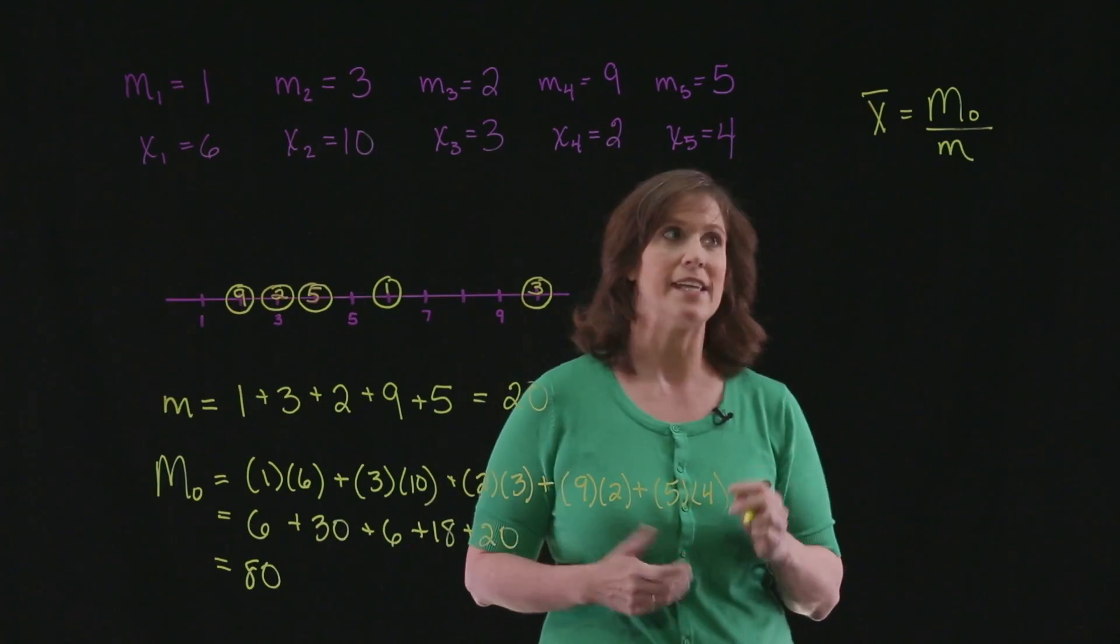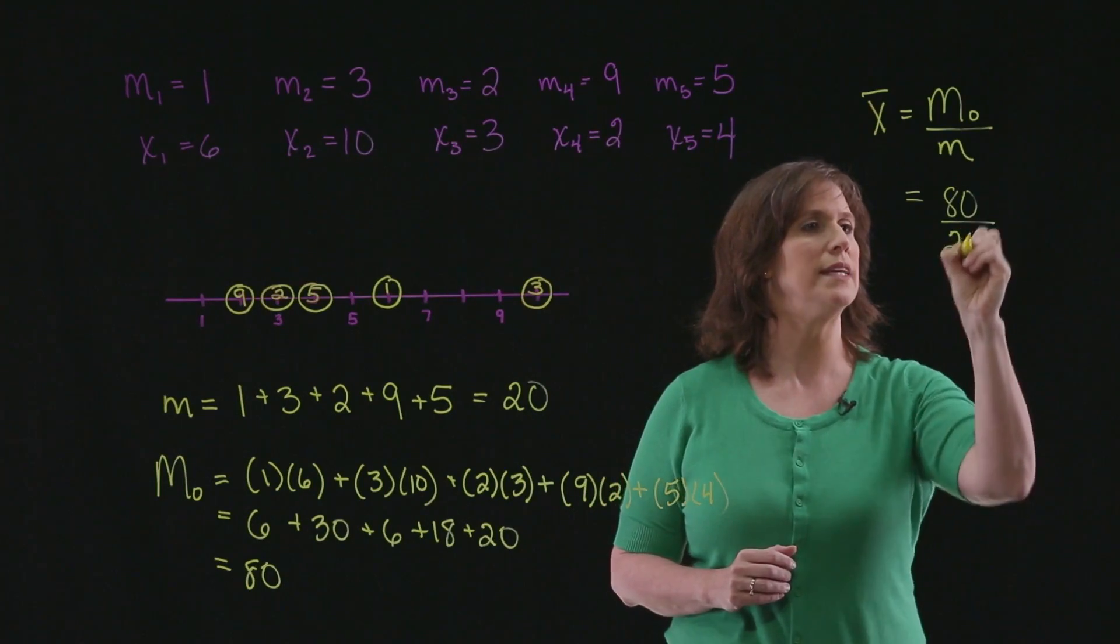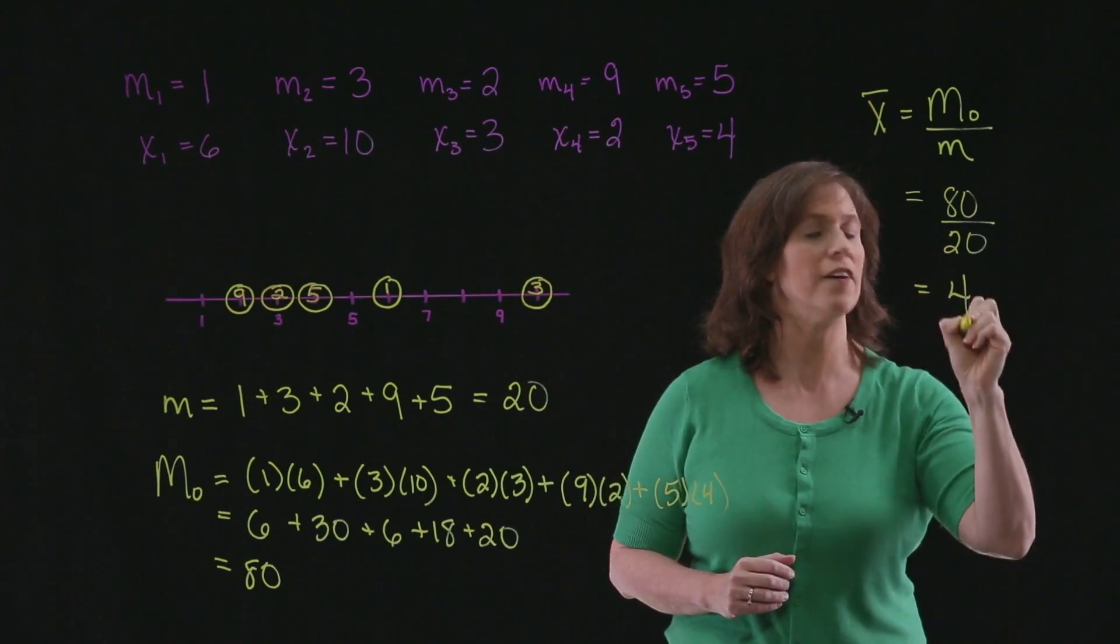So I can come up here to find my center of mass, and I have 80 divided by 20. And so my center of mass is at 4.